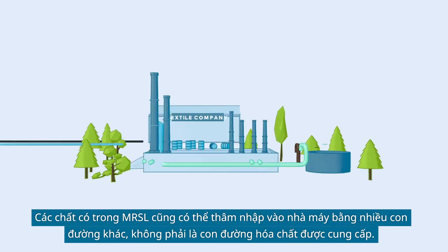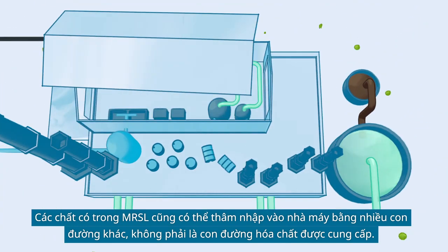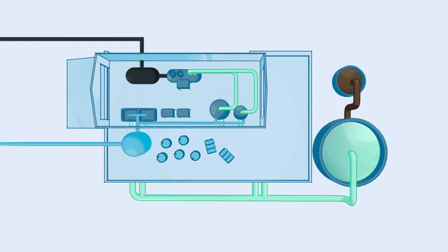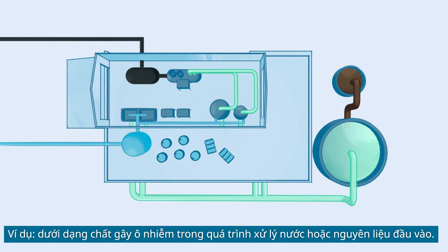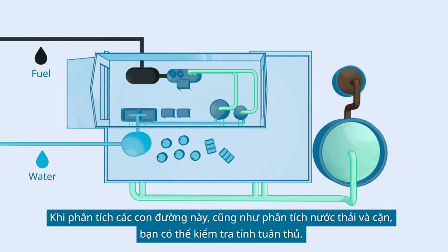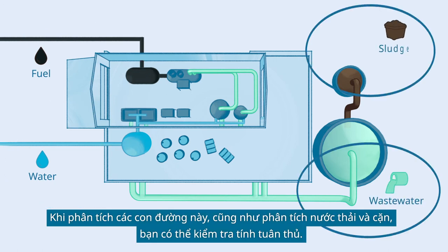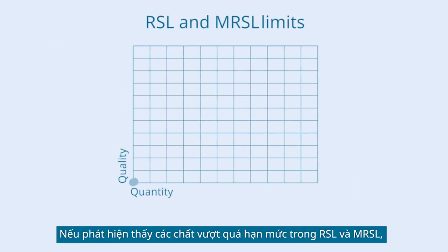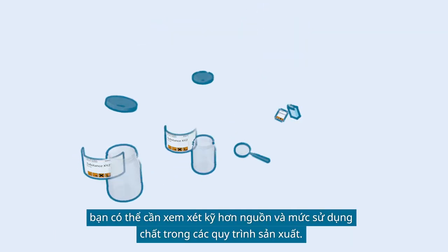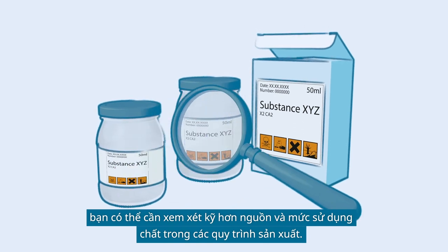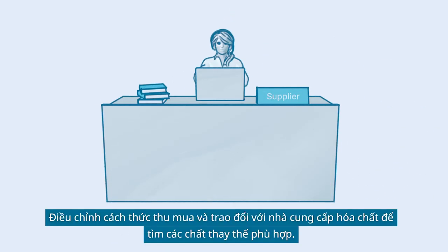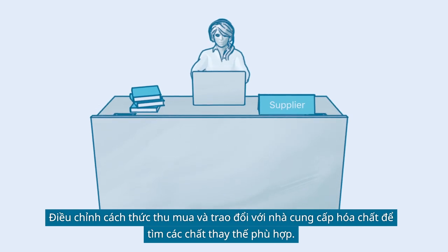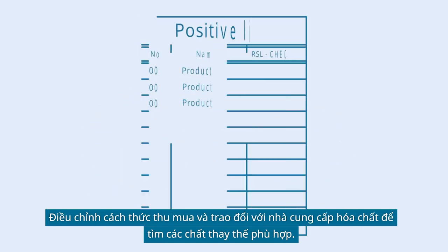Substances on the MRSL may also enter the factory through pathways other than supplied chemicals — for example, as contaminants in process water or input materials. An analysis of these pathways as well as of wastewater and sludge will help you to verify conformance. In case substances are found beyond the limits on the RSL and MRSL, you may need to take a closer look at the source and use of those substances in your production processes. Adjust your procurement practices and talk to your chemical suppliers to find suitable substitutes.